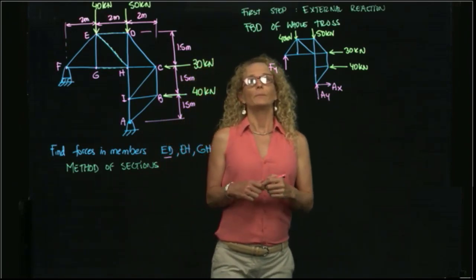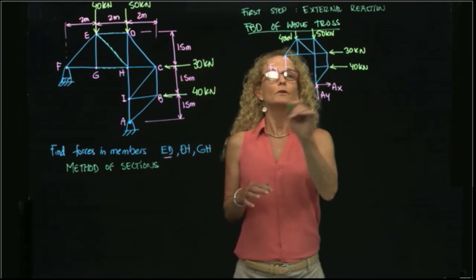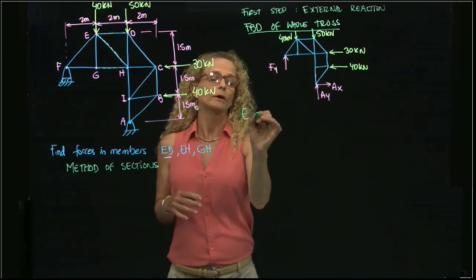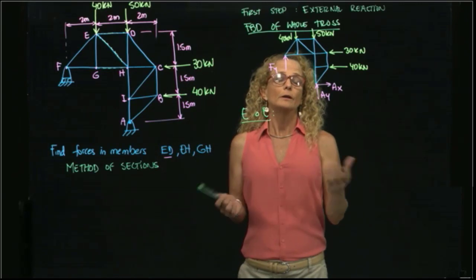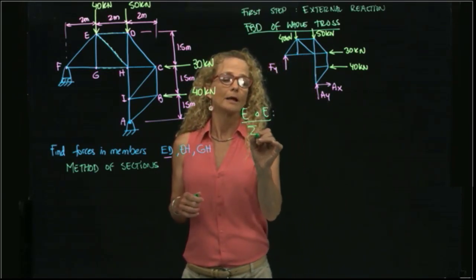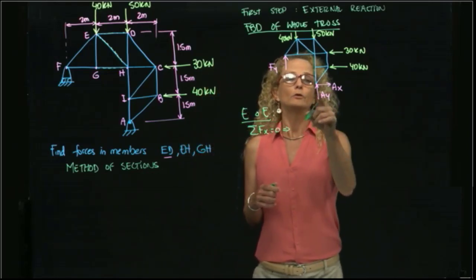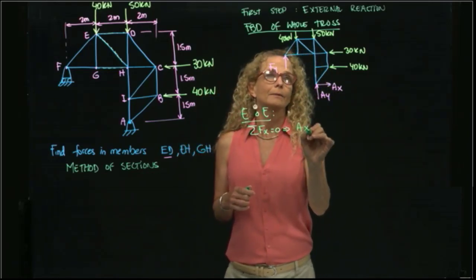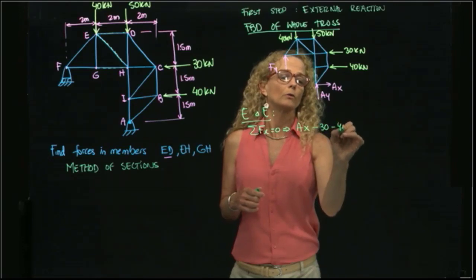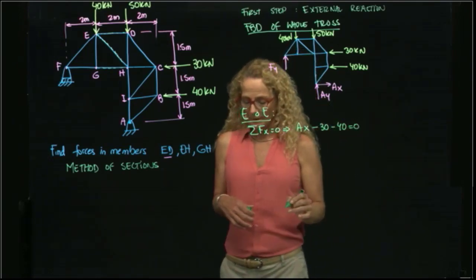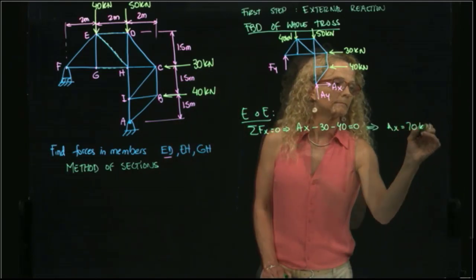Now that I have the free body diagram, I can apply equations of equilibrium. Summing forces in X equals zero, which gives me AX. The horizontal reaction forces are 30 minus 40 equals zero, therefore AX is equal to 70 kilonewtons.